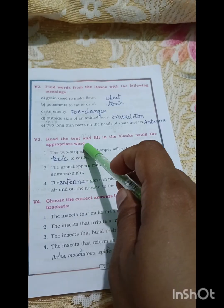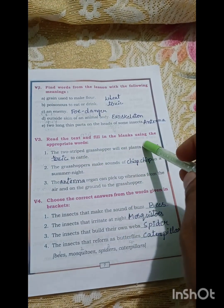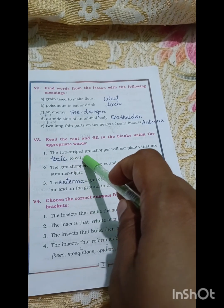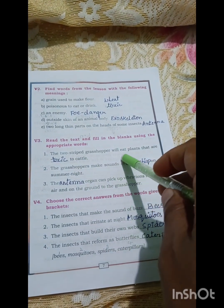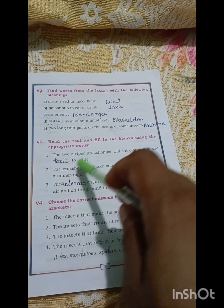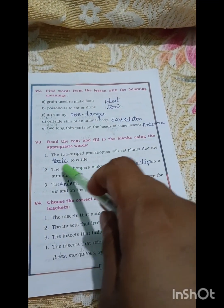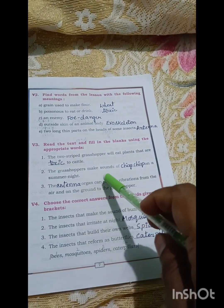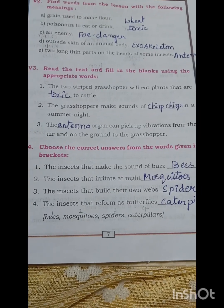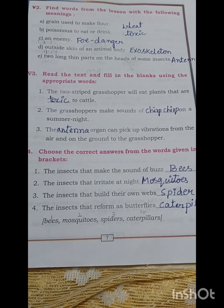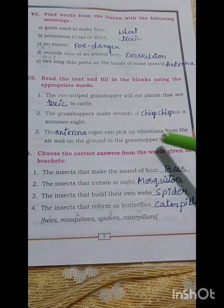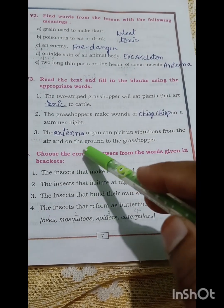Read the text and fill in the blanks using the appropriate words. The two striped grasshopper will eat plants that are toxic to cattle. The grasshoppers make sound of chirping on a summer night. The antenna organ can pick up vibrations from the air and on the ground to the grasshopper.